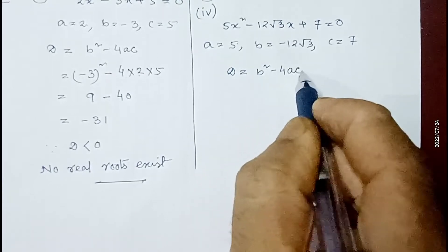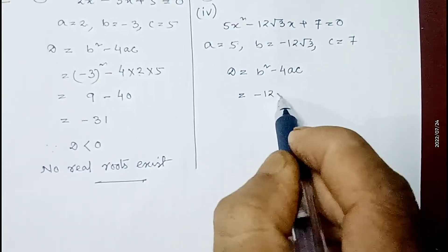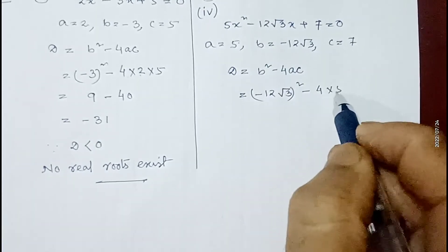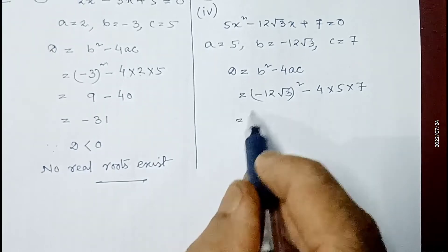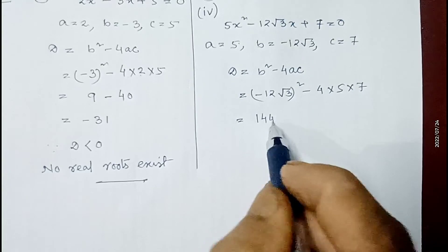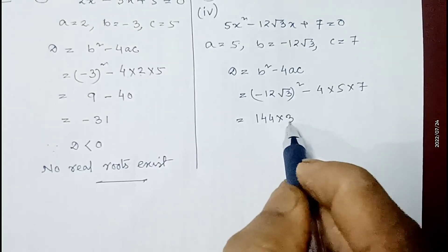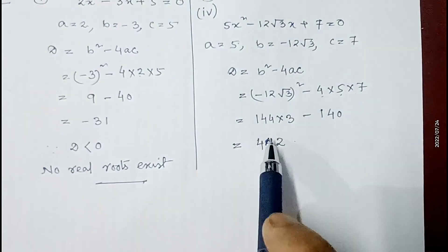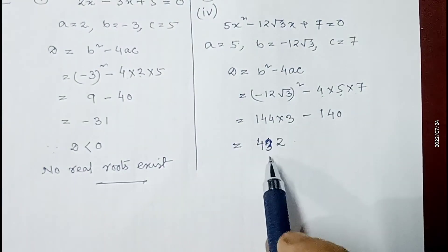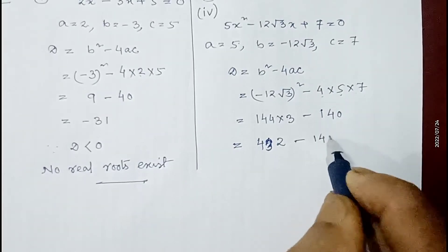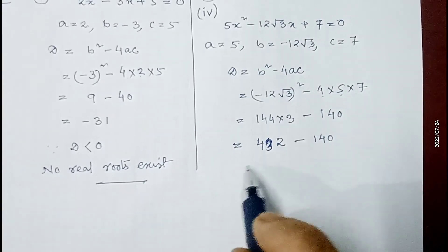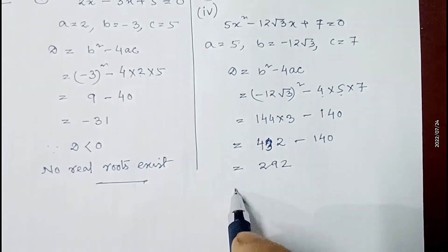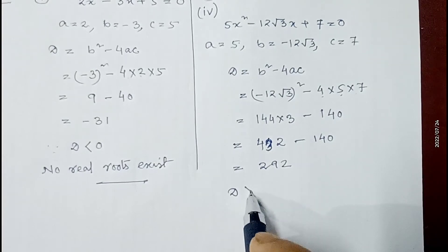Here b = -12√3, so b² = (-12√3)² = 144 × 3 = 432. Then 4ac = 4 × 5 × 7 = 140. So D = 432 - 140 = 292. Since discriminant is 292, which is greater than 0, we write D > 0.